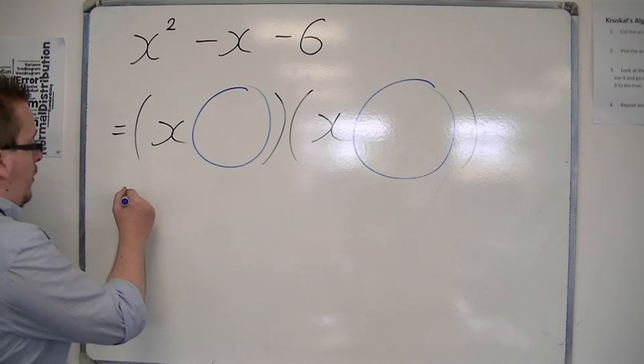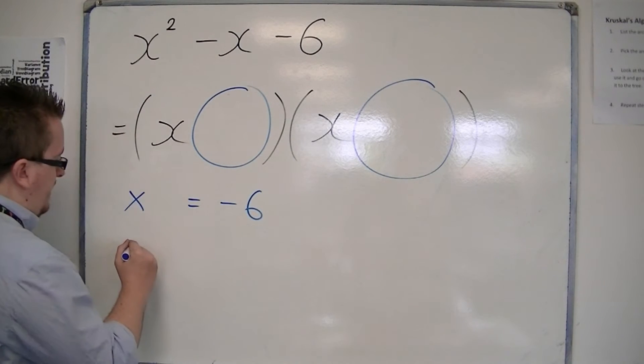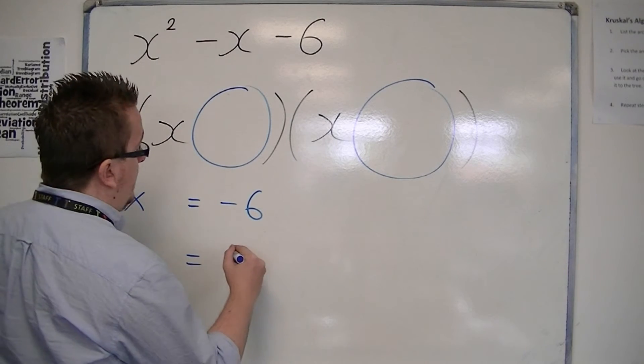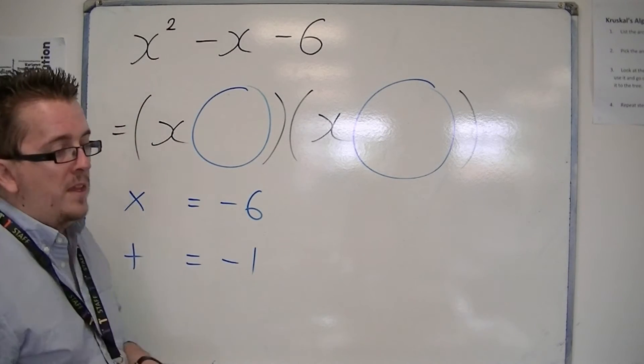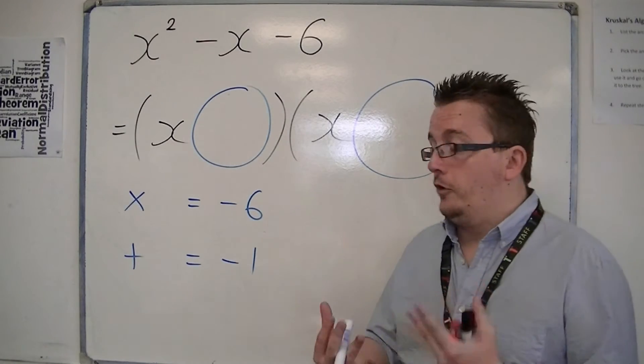So we need them to multiply together to make minus 6, and we need them to add together to make minus 1. And what you really need to do is just think about what those two numbers could possibly be.